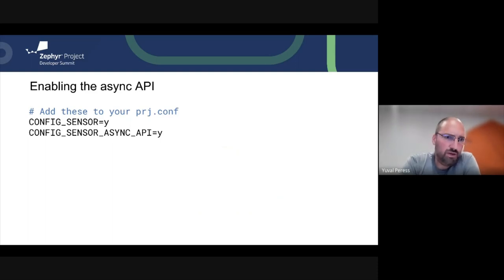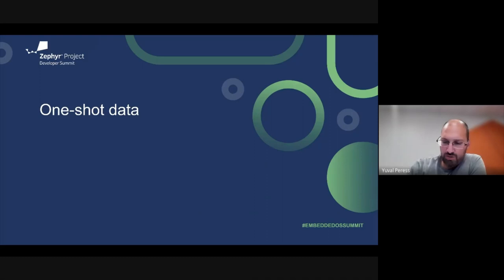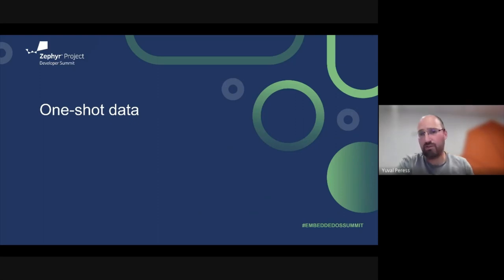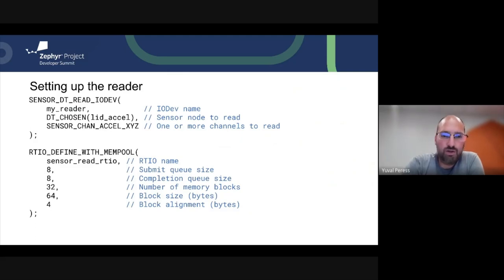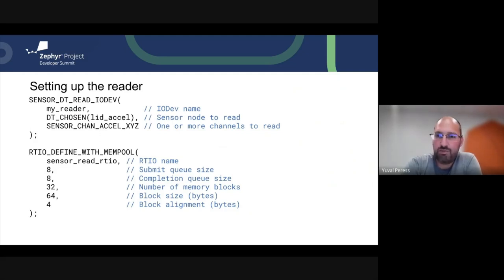To enable this, first we enable sensors and then enable the experimental sensor async API. There are two modes of reading we'll cover: one-shot data, which is effectively an asynchronous version of the existing APIs, and streaming data, which we'll touch on in the second half. For the one-shot sample, the first thing we need to do is set up a reader using the RTIO io_dev. If you're not familiar with the RTIO subsystem, please read about it on the Zephyr documentation page.